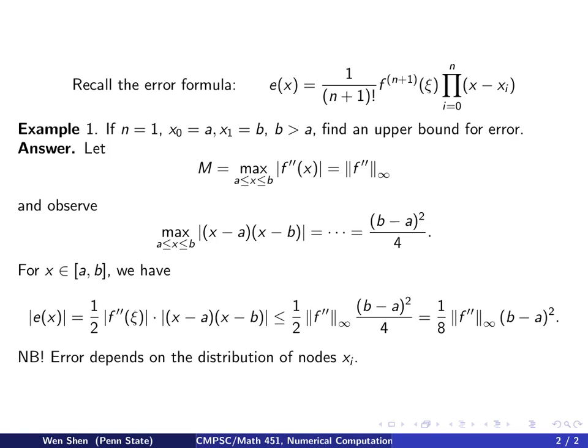The final observation we would like to make is that looking at the error formula, we see that 1 over (n+1) factorial is a constant. Nothing we can do about it. f to the (n+1) derivative at ξ, that is given once the function f is given. There's not much you can do, and you don't know the location of ξ, so the best you can do to get an estimate will be taking the maximum value of this.